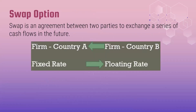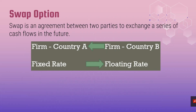A swap is an agreement between two parties to exchange a series of cash flows in the future. In our example, there's a firm in country A and a firm in country B. Swap options commonly occur between multinational entities. For example, in the case of Xerox, there's a central treasury in Dublin, Ireland, which transmits cash to different Xerox entities worldwide. The rates involve a fixed rate for country A and a floating rate. With a floating rate, there's an element of a third party supplying benchmark rates.